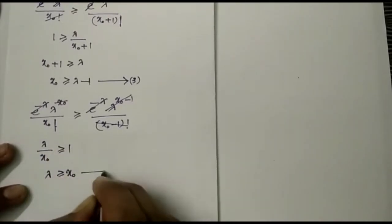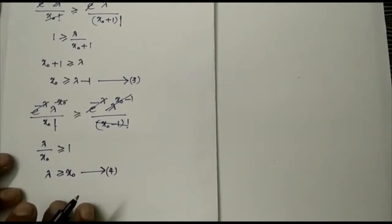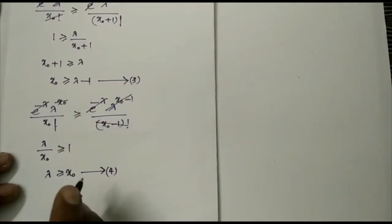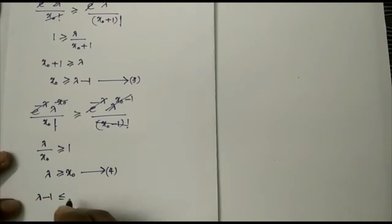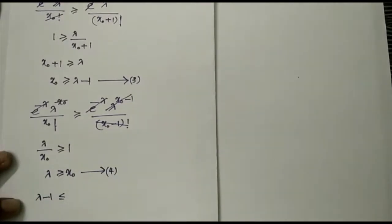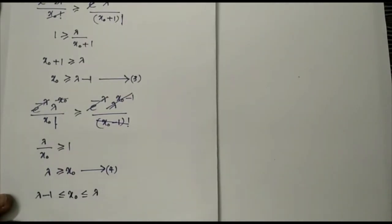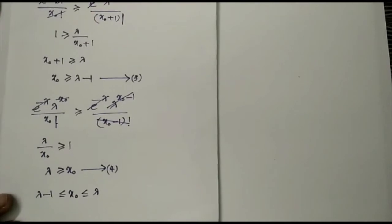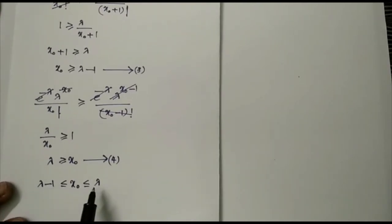we get x0 ≥ λ, or λ ≤ x0 — equation 4. So combining equations 3 and 4, we get λ − 1 ≤ x0 ≤ λ. That is, the mode x0 lies between the values λ − 1 and λ.